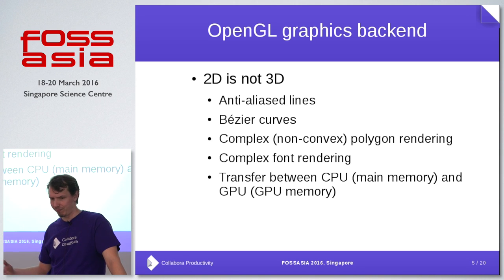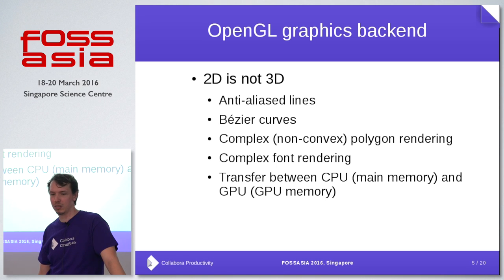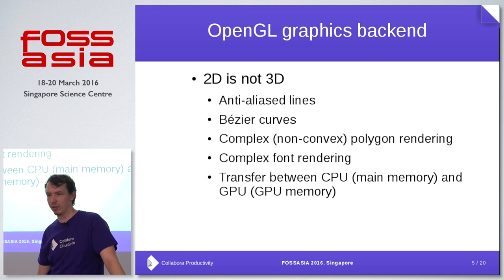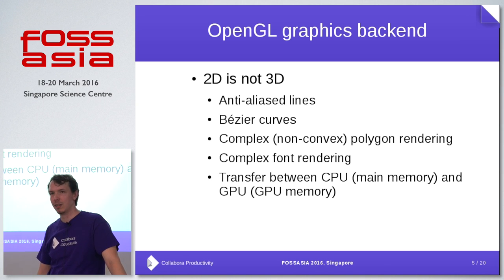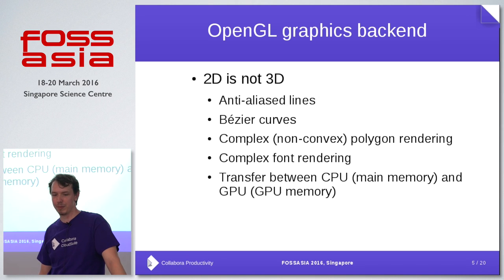Then there are primitives like Bezier curves — curves you have to do on the CPU. Ideally we would do this on the GPU to accelerate it. There are also problems like complex polygon rendering and tessellation of polygons. If the polygon is convex and doesn't have holes or anything, it's not a problem to render. But when you have more complex polygons, the problems start and you have to handle them differently on the GPU.